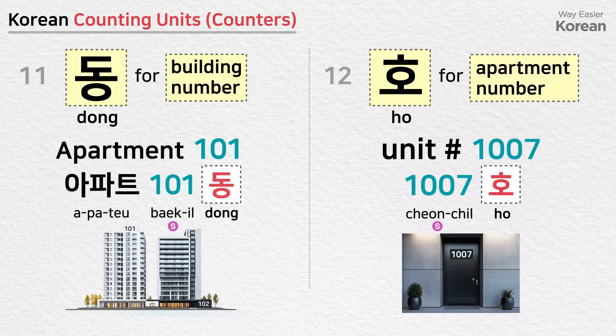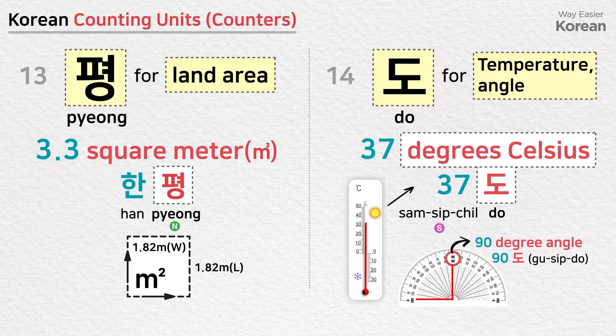동 is used to indicate the number given to a building: apartment building 101 — 아파트 101동. 호 is used to indicate an apartment or unit number in a building: unit number 1007 — 1007호. 평 is a counting unit for land area (3.3 square meters = 한 평). 도 is a counting unit for measuring temperature or the size of an angle: 37 degrees Celsius — 37도; 90-degree angle — 90도.